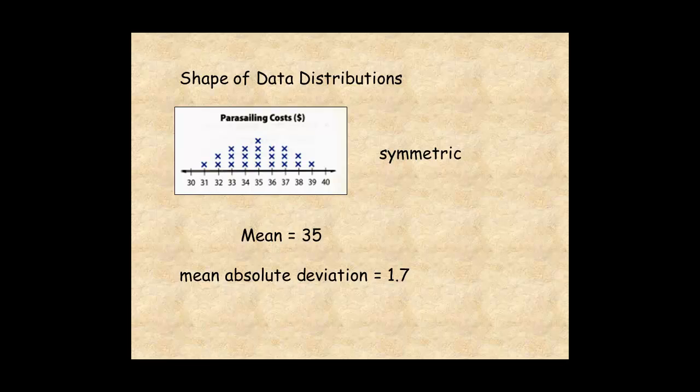The data are centered around $35. Since the mean absolute deviation is approximately equal to 2, most of the data are spread between $33 and $37.